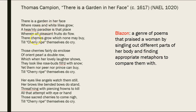Her mouth, her lips, are cherries, and those cherries enclose her teeth, which are pearls. And her eyes are angels, and her brows are bended bows, and so on and so forth. This is a well-known example of a common motif in Renaissance poetry.